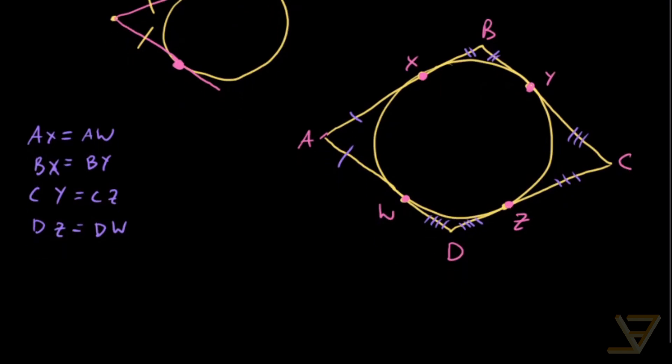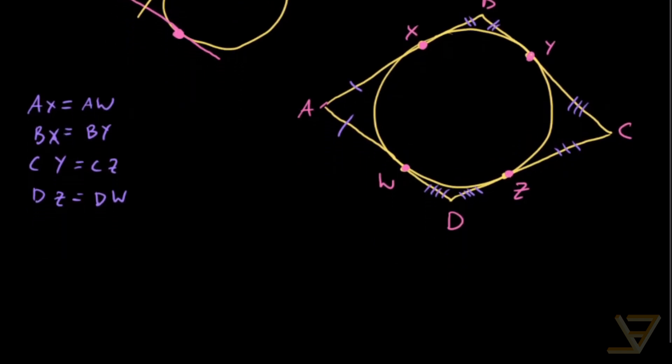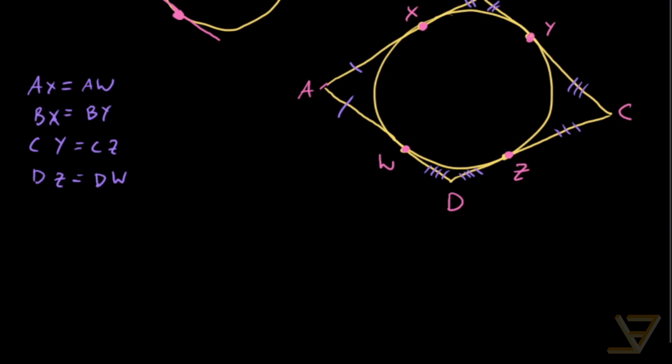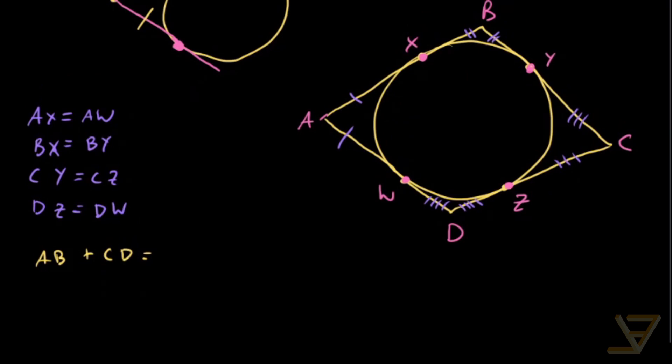Now what we're going to do is we're going to be combining these equations. So let's start with AB plus CD. And we can see that AB plus CD is equal to, if we break down AB, we get AX plus BX. And if we break down CD, we get CZ plus DZ.